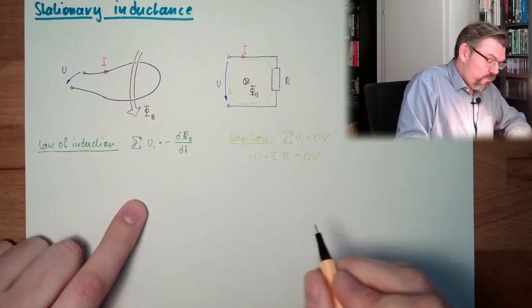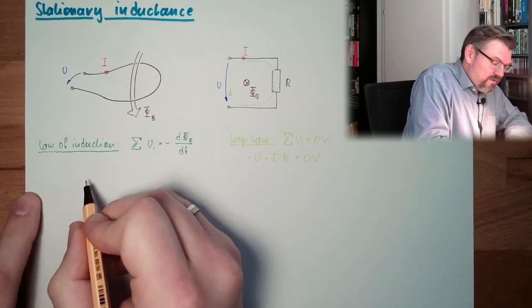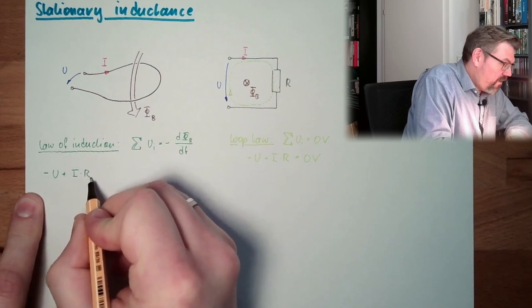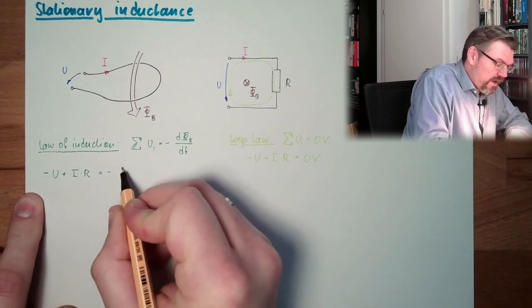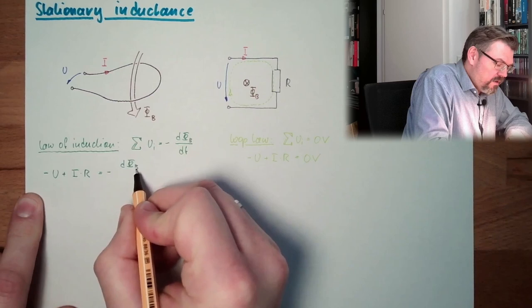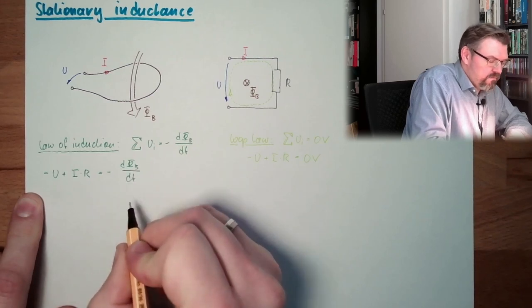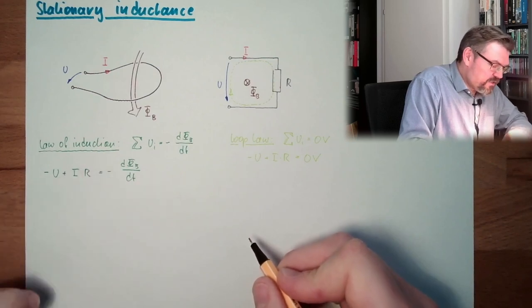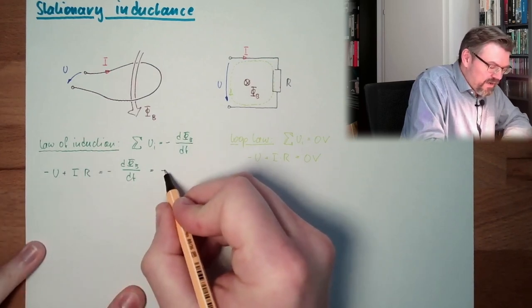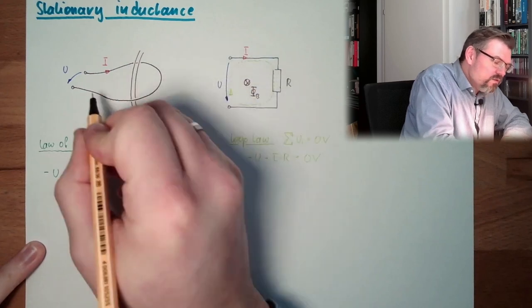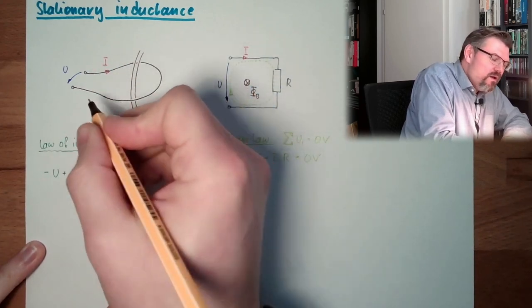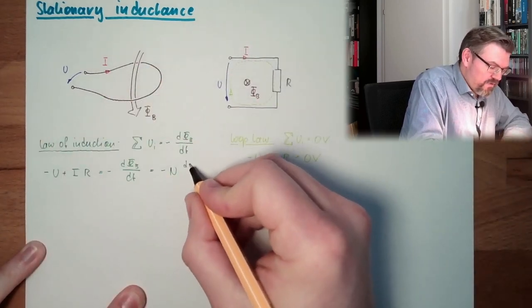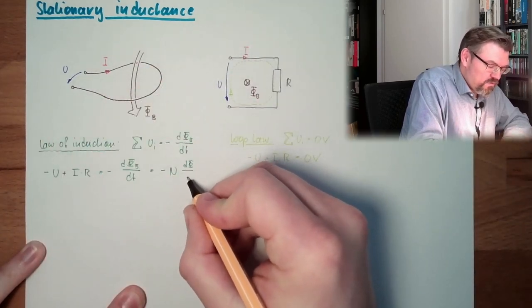And now we can write it down. It's minus u plus I multiplied by R equals minus d psi dt. And this is the flux linkage, so it's actually minus n. If there's one, this n is now here 1. But we would have more loops. The flux change over time.